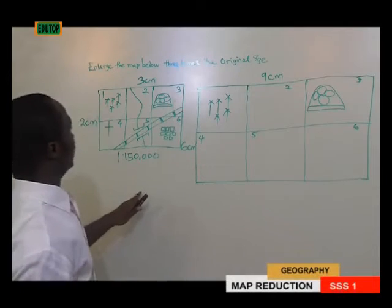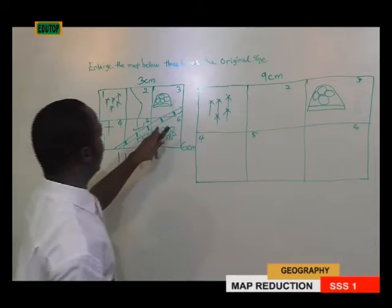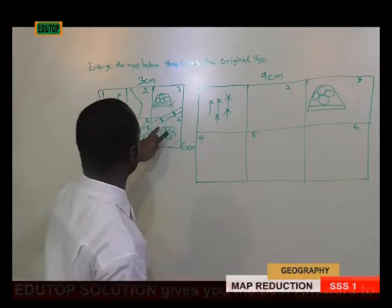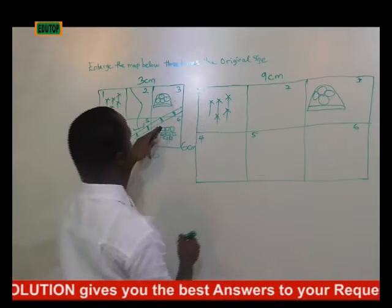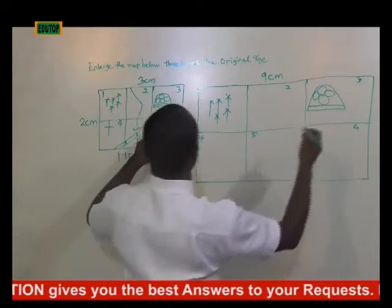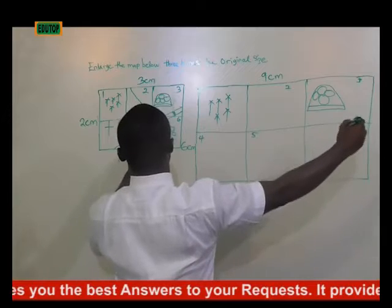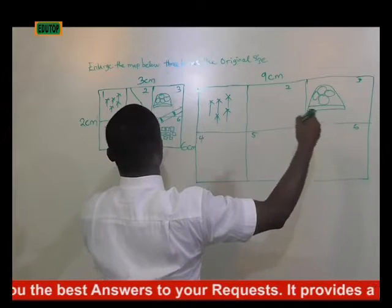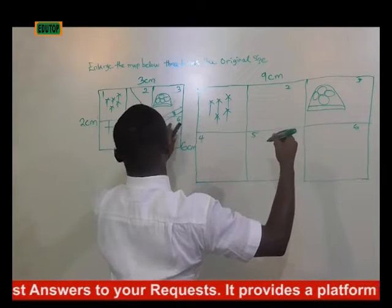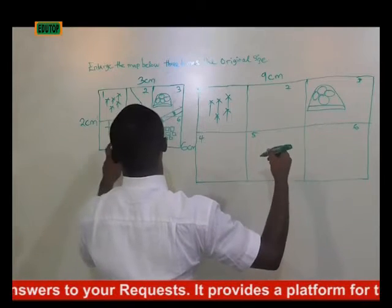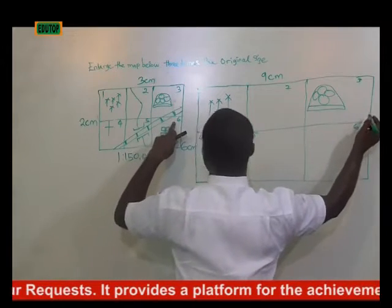Now let's look at this feature — the major route here, running from grid three to five, three to six, to five, and to four. Follow it accordingly.